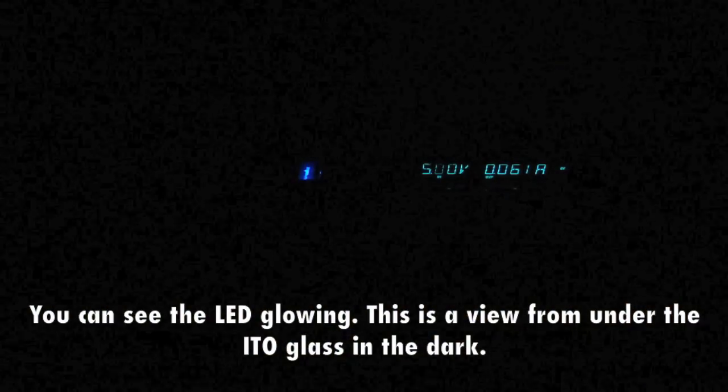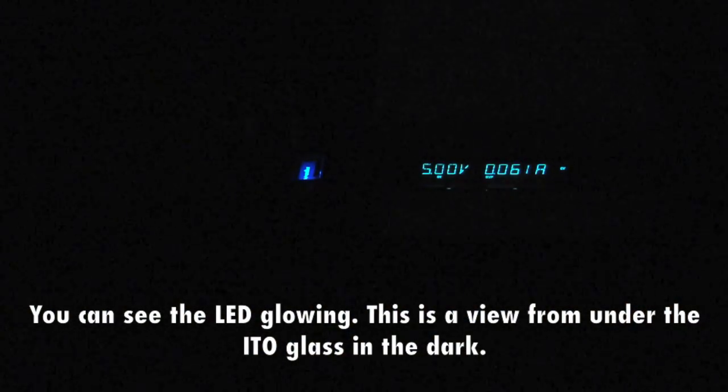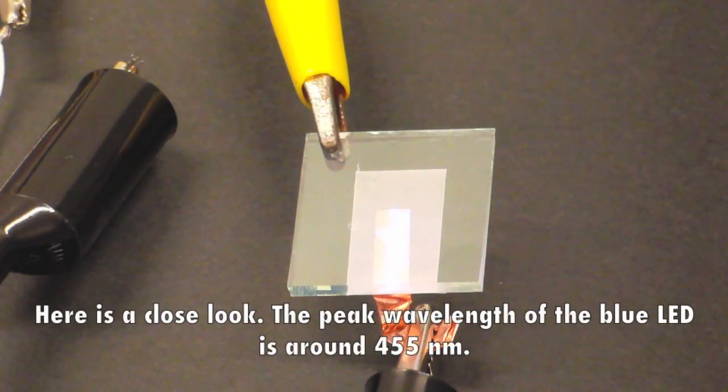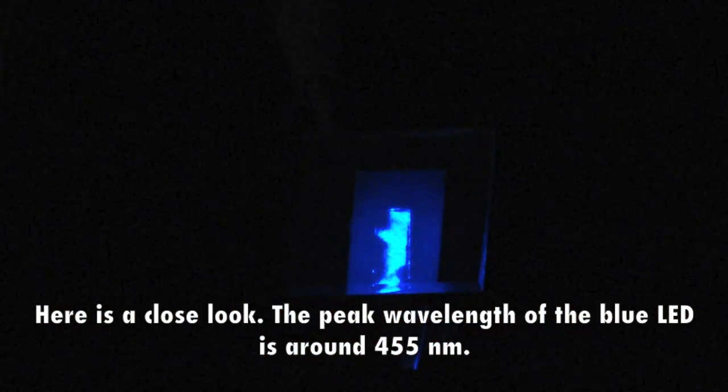You can see the LED glowing. This is a view from under the ITO glass in the dark. Here is a close look - the peak wavelength of the blue LED is around 455 nanometer.